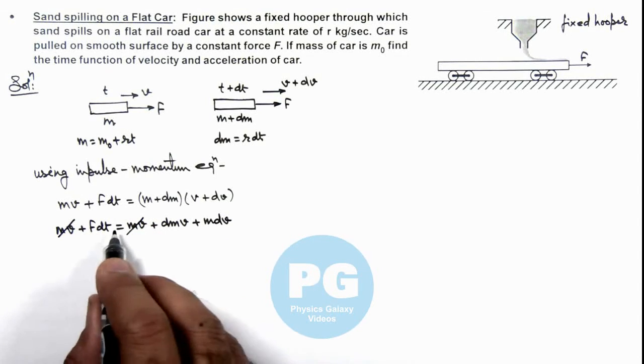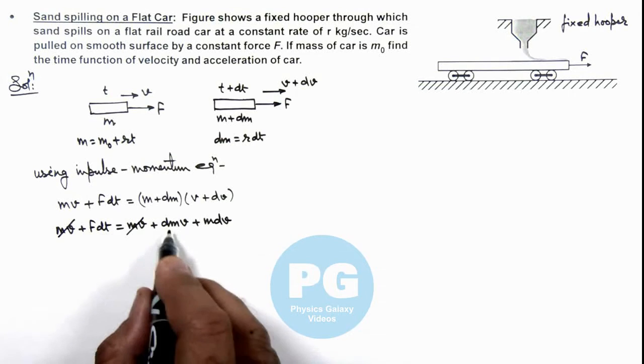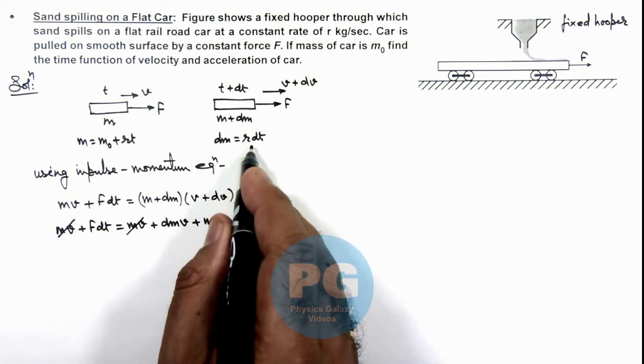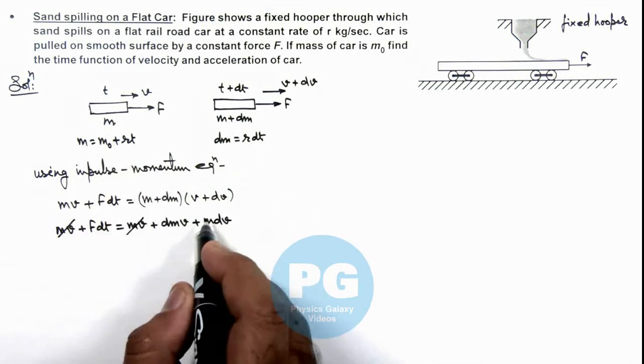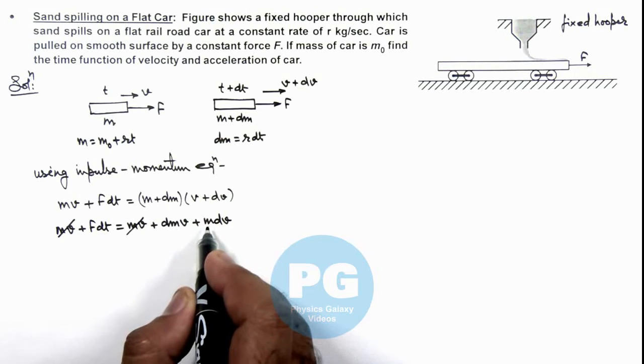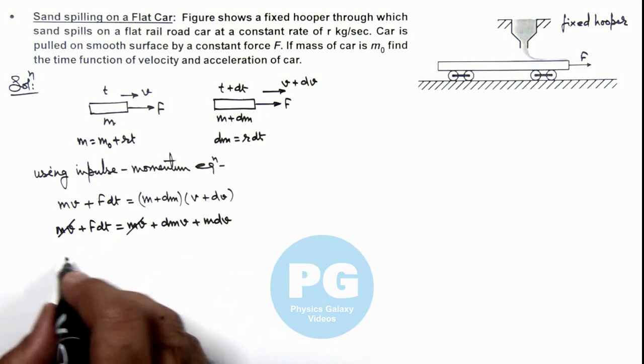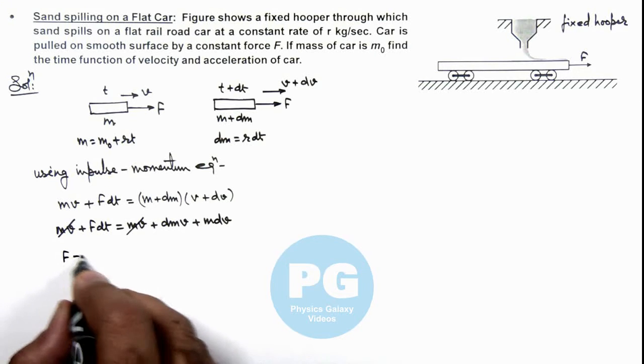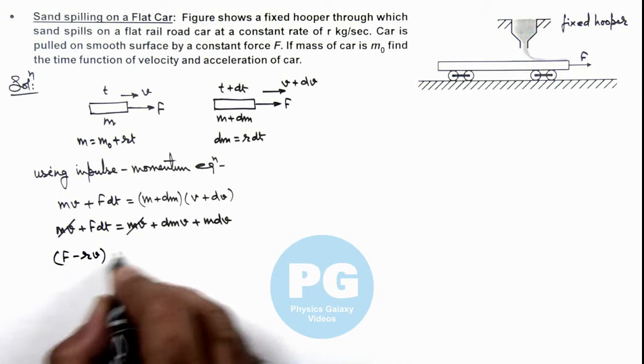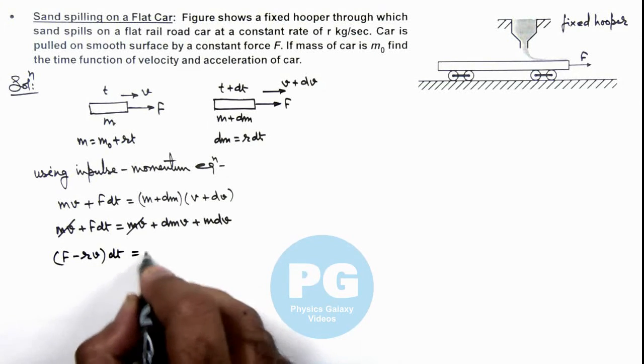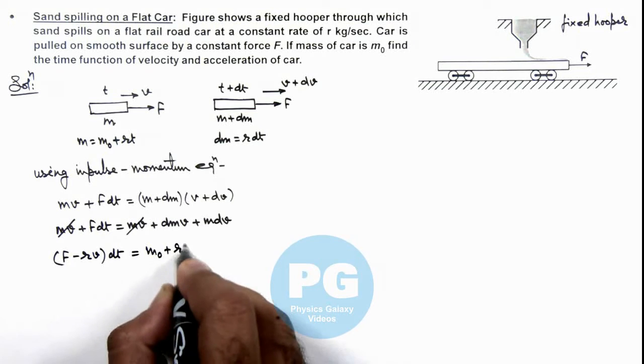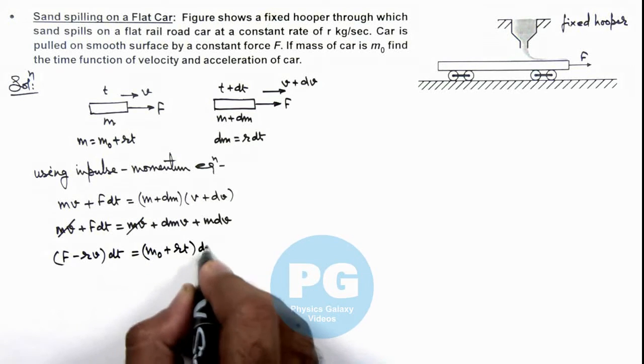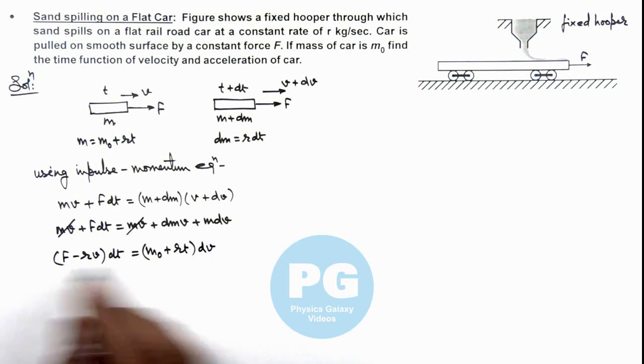Rearranging these terms here, dm can be written as r dt and m can be written as m₀ plus rt. So here we can see this relation gives us F minus rv dt is equal to (m₀ plus rt) multiplied by dv.